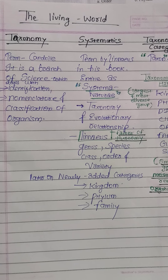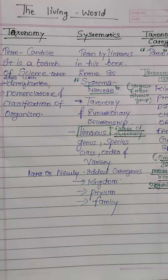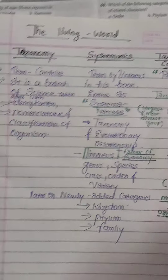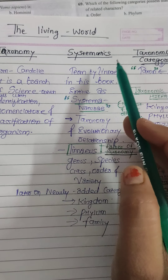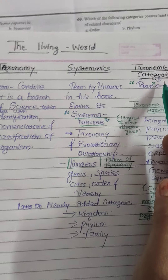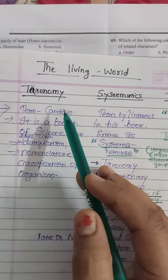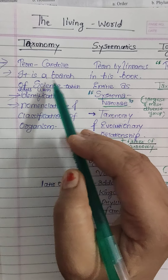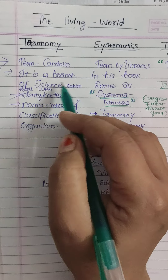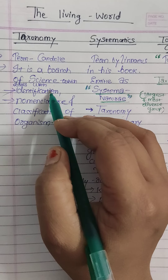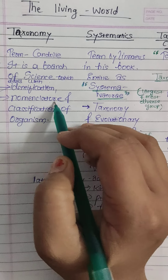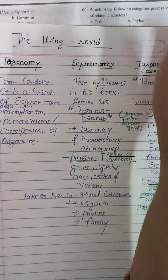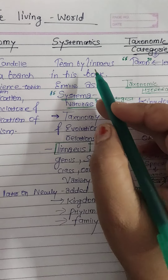In this part we will talk about some important terms related to classification. The first term is taxonomy. The term taxonomy was given by Candolle, and taxonomy is defined as a branch of science which deals with identification, nomenclature, and classification of organisms.